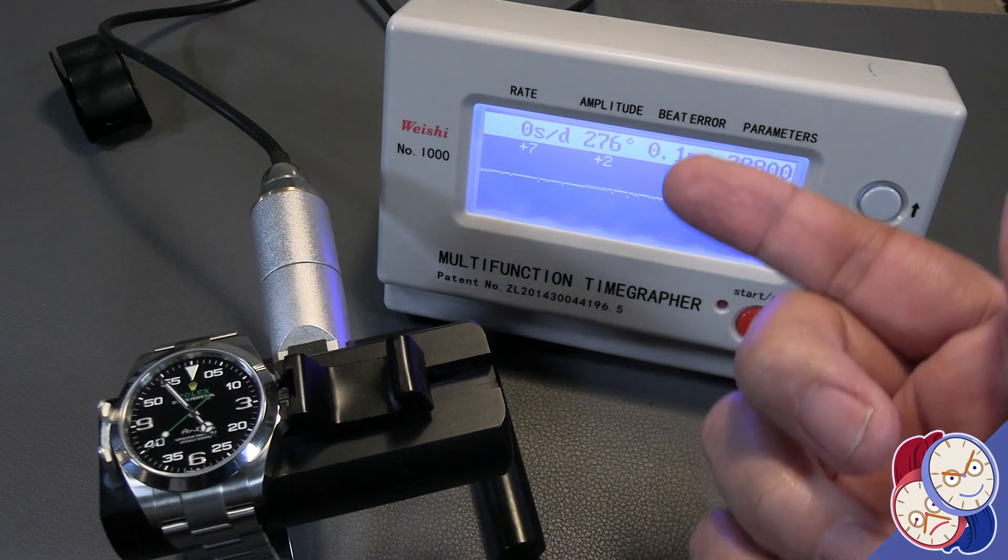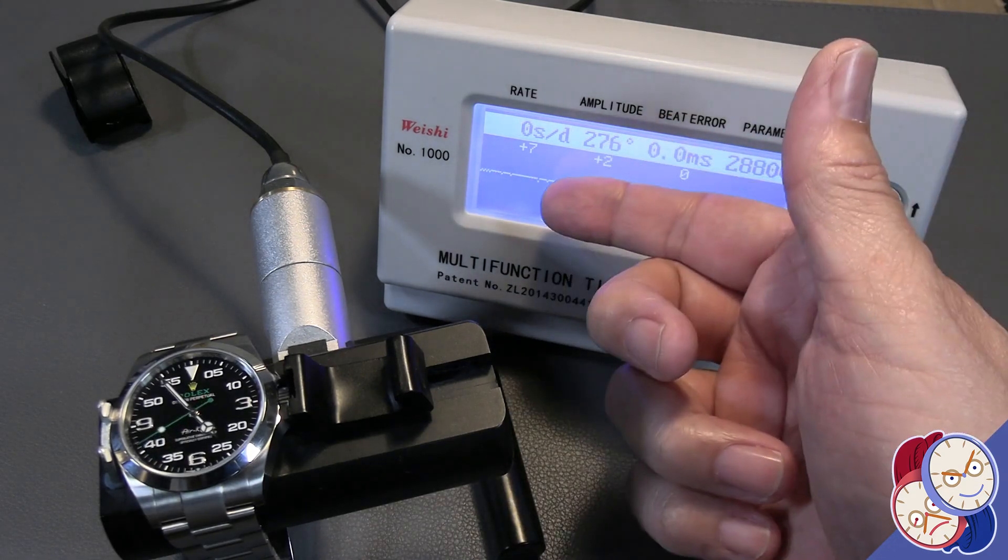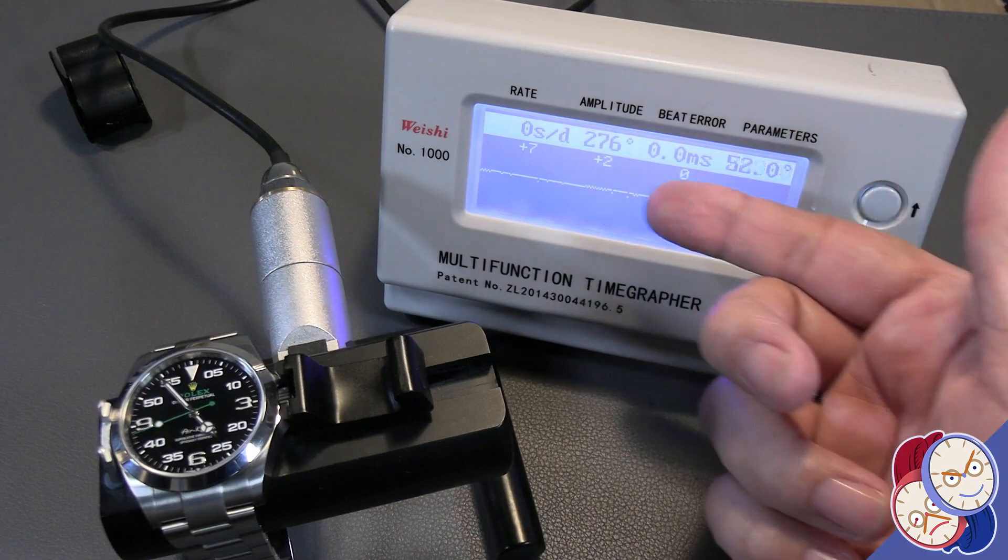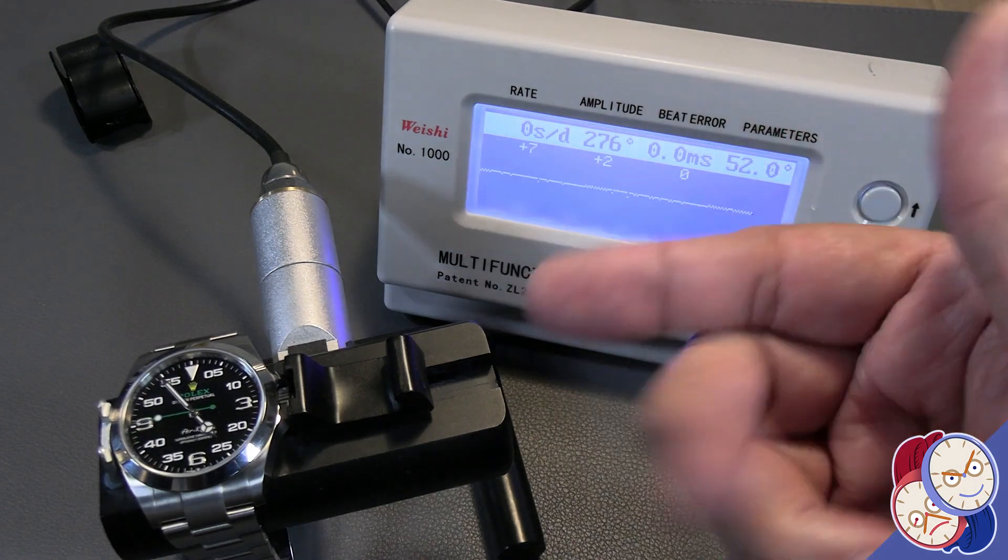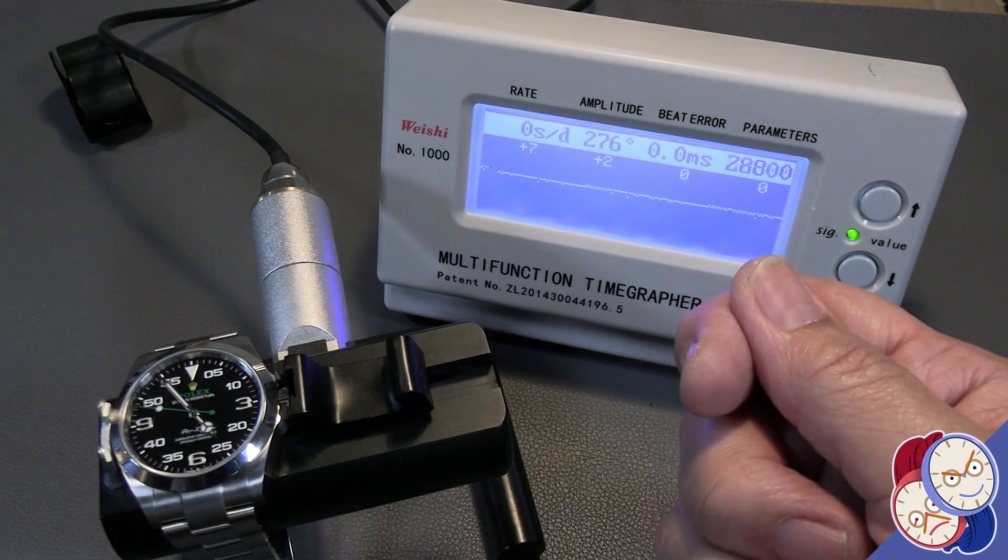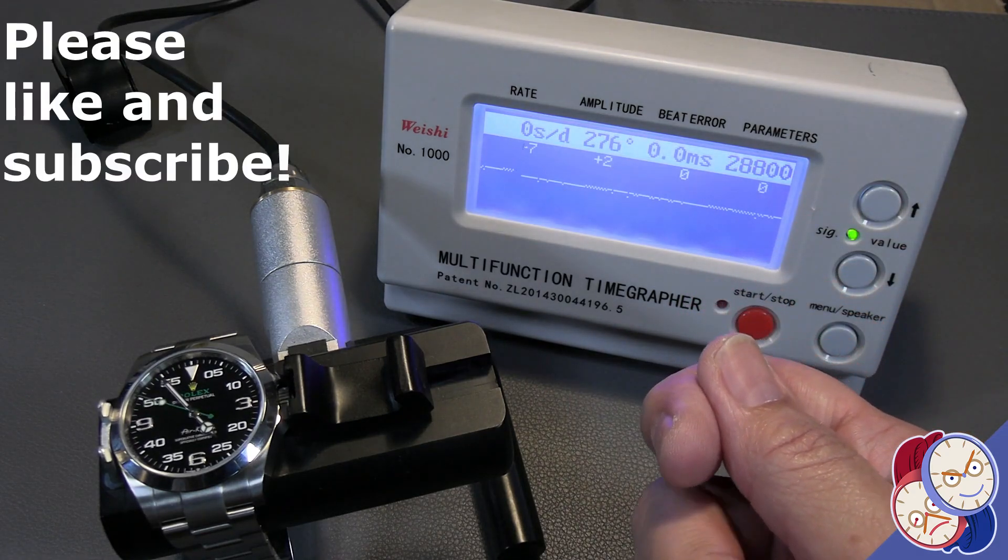So in the case of this watch, it's settling down. You see, if you notice, it says plus seven, plus two, now it's zero. So basically, once the watch sits and it settles, it runs a little bit more easily.